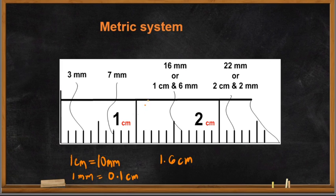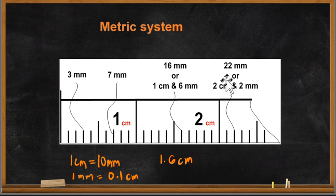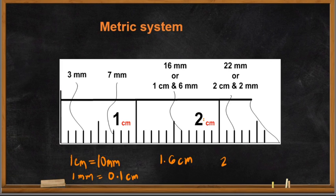Reading from the tape, we count: 0.1, 0.2, 0.3, 0.4, 0.5, 0.6 beyond 1 cm — so the measure is 1.6 cm. For another example, 2 cm and 2 mm equals 22 mm, because from zero to that line we have 22 lines. To express in centimeters: 2 and 0.2, giving 2.2 cm. That is how you read the metric part of the pole push rule.